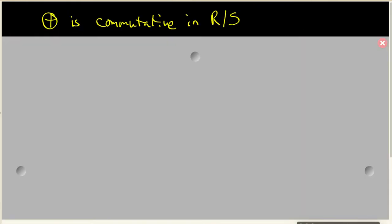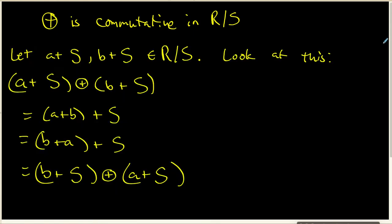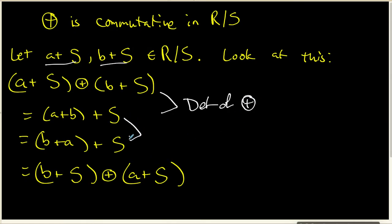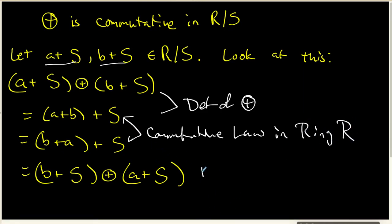We now need to show that coset addition is commutative. Stop the video and try to prove this. Here is my proof. We start with two arbitrary cosets and add them. Going from the first step to the next is the definition of coset addition. The key step uses the commutative law inside the ring R. Then we apply the definition of coset addition again. Since we successfully swapped the order of the two cosets, coset addition is commutative in our quotient structure.